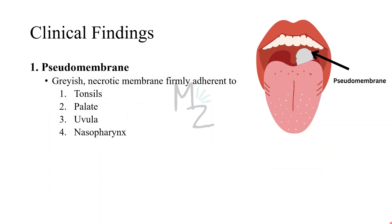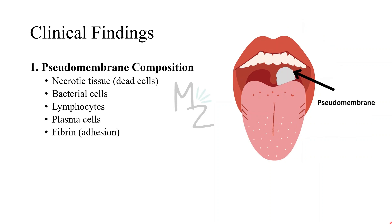What is a pseudomembrane? There is a fibrinous exudate that forms a tough, adherent gray pseudomembrane, firmly adhering to the tonsils, palate, uvula, and nasopharynx. This is how the pseudomembrane looks. It is composed of necrotic tissue, bacterial cells, lymphocytes, plasma cells, and fibrin. Fibrin plays a major role in its adherence to the mucosal layer in our mouth.